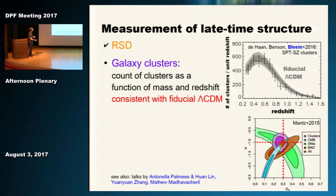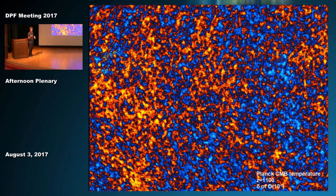Combining cluster results with other probes, as done in this paper by Mantz et al., clusters provide independent constraints with a different degeneracy of parameters. Joining them with geometric probes of CMB, supernovae, and BAO gives a very tight constraint on matter density and the equation of state parameter—right at the spot of our fiducial Lambda CDM cosmology. So clusters check out as well.